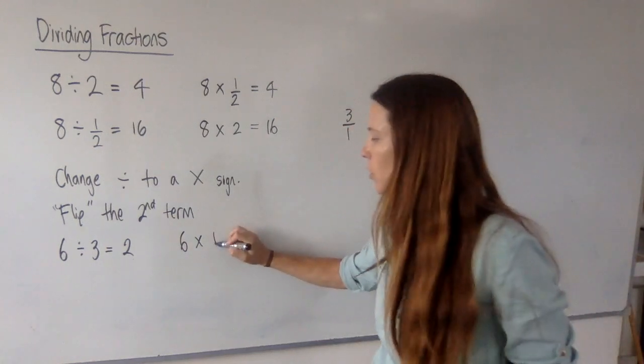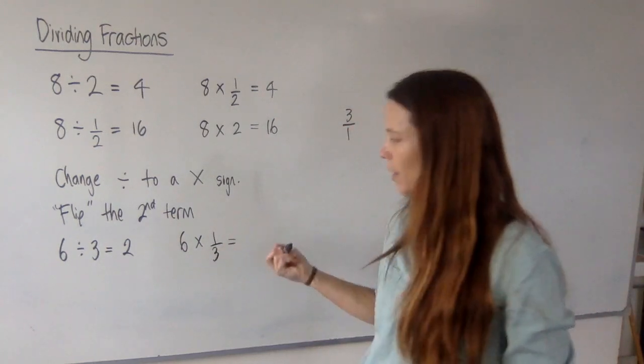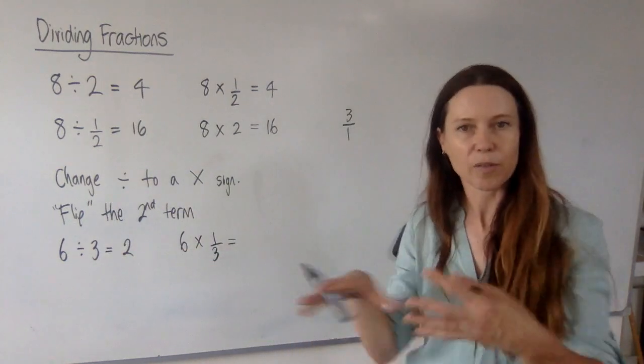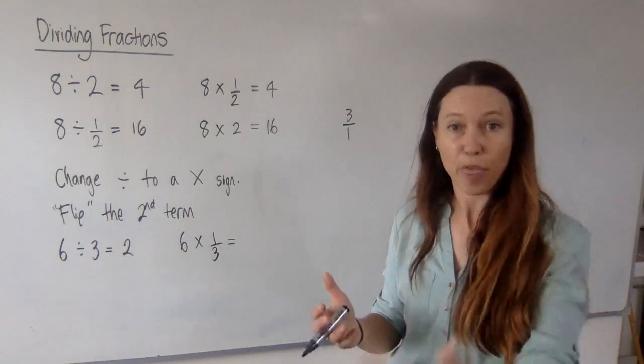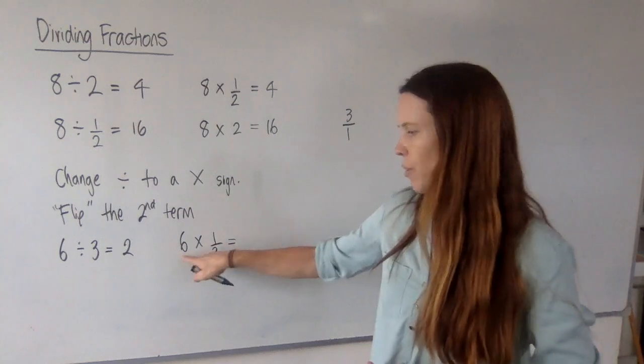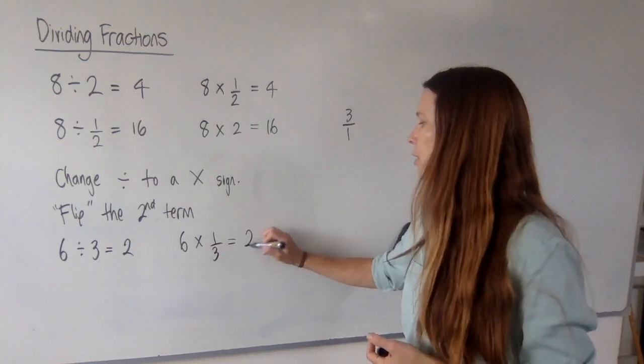we get a third. Well, that makes sense. Dividing something by 3, that's breaking it into three parts. And that is finding a third of it. And what's a third of 6? It's 2. So we can see it works.